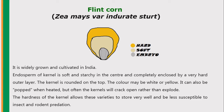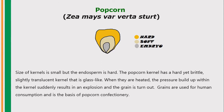Popcorn — Zea mays var. everta. It also has a hard outer layer, soft middle part, and embryo, but the size of the kernels is small. The endosperm is harder compared to flint corn. The popcorn kernel has a hard, brittle, and slightly transparent, glass-like kernel. When heated, the pressure built up within the kernel suddenly results in the expulsion of the grain. These grains are used for human consumption and are the basis for popcorn confectionery.